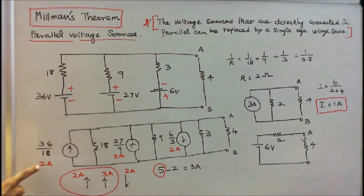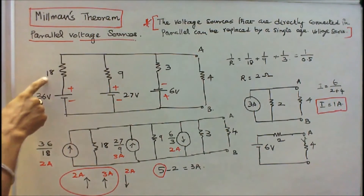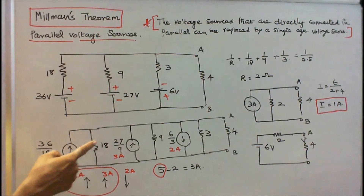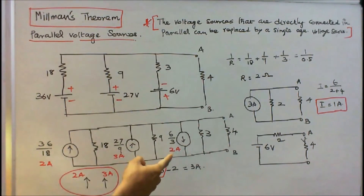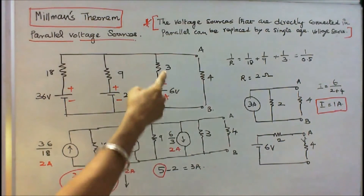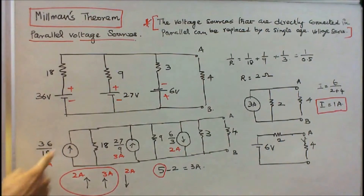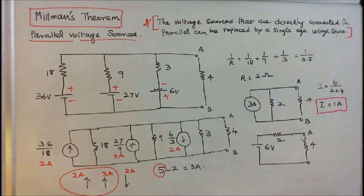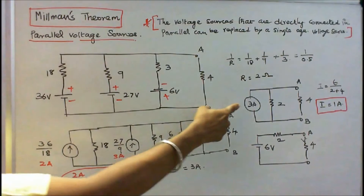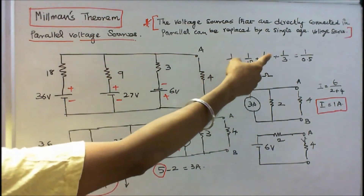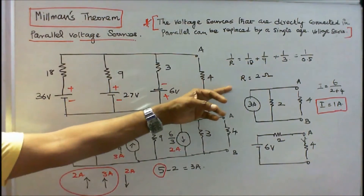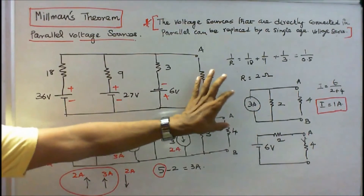Converting: 36/18 equals 2 Amps with 18 Ohms in parallel. 27/9 equals 3 Amps with 9 Ohms in parallel. 6/3 equals 2 Amps with 3 Ohms in parallel. Considering directions: 2 plus 3 minus 2 equals 3 Amps. The equivalent resistance: 1/R equals 1/18 plus 1/9 plus 1/3 equals 0.5, so R equals 2 Ohms. The equivalent current source is 3 Amps with 2 Ohms.